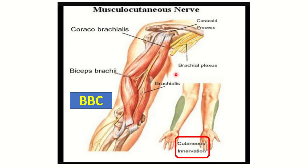In the second picture, the smaller one, we can see the cutaneous sensation area of the musculocutaneous nerve. The musculocutaneous nerve supplies cutaneous innervation to the lateral aspect of the flexor aspect of the forearm. We can also see that the musculocutaneous nerve arises from the lateral cord of the brachial plexus.